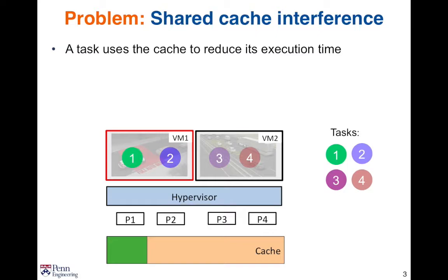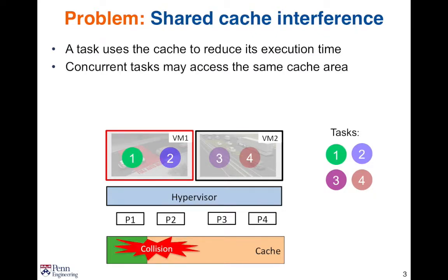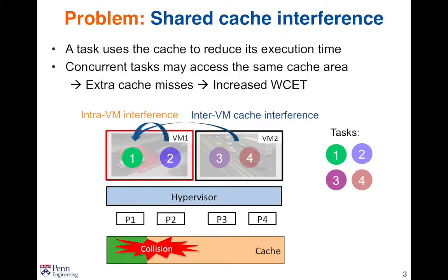One of the challenges is the shared cache interference. We know that a task uses the shared cache to reduce its execution time. When we look at multicore virtualization systems, there are a lot of tasks running in different virtual machines on the shared multicore processor. Because these tasks share the same cache, the concurrent task may access the same cache area and evict out each other's cache content. This interference may come from tasks inside the same VM or tasks from different VMs. Whenever the interference occurs, it will cause extra cache misses to the tasks inside the VM, which will increase the execution time of tasks.